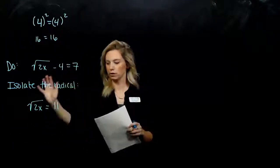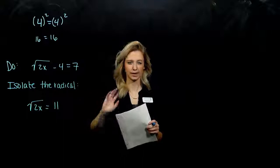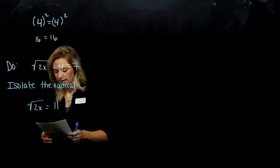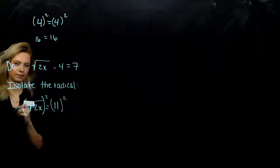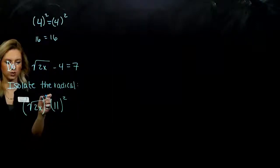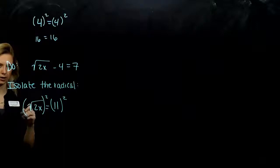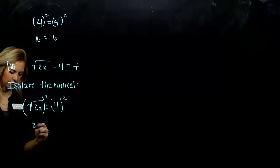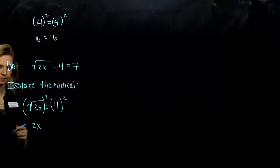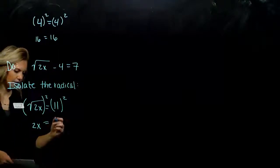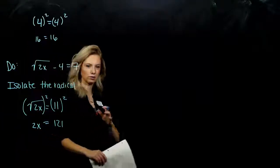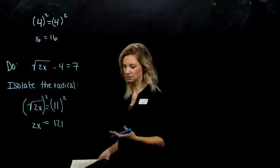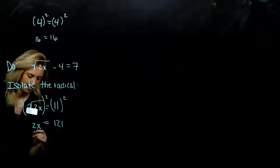Now I have that set up — one thing equal to another. I can square both sides and the result is still going to be true. If I square on the left, I have to square on the right. My square is undoing that root, so I'm just left with the insides: 2x. And 11 squared is 121. Now that we got rid of those radicals, we can solve easily — it's linear. We just have to divide by 2.